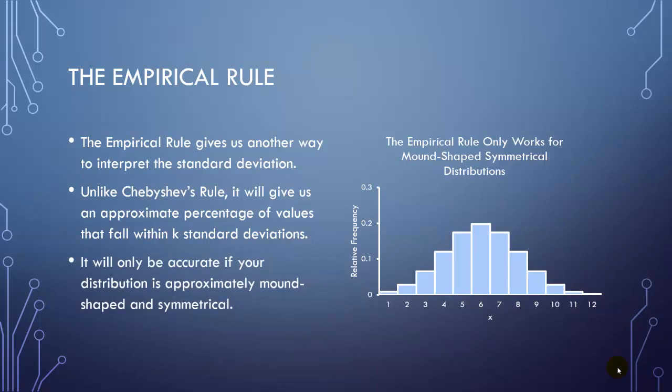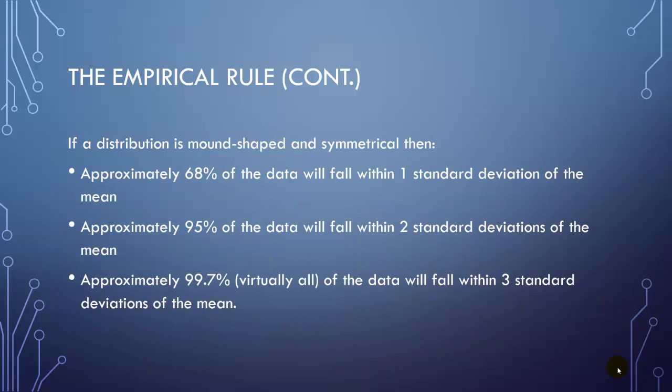Again, only if it's mound-shaped and symmetrical. So here's the rule. If a distribution is mound-shaped and symmetrical, 68% or approximately 68% of that data will fall within one standard deviation. Approximately 95% will fall within two. And virtually all the data will fall within three standard deviations of the mean, 99.7%. That means only three out of 1,000 cases will not fall within three standard deviations. This is much more precise than Chebyshev's theorem, which only said at least 89% would fall within three standard deviations.